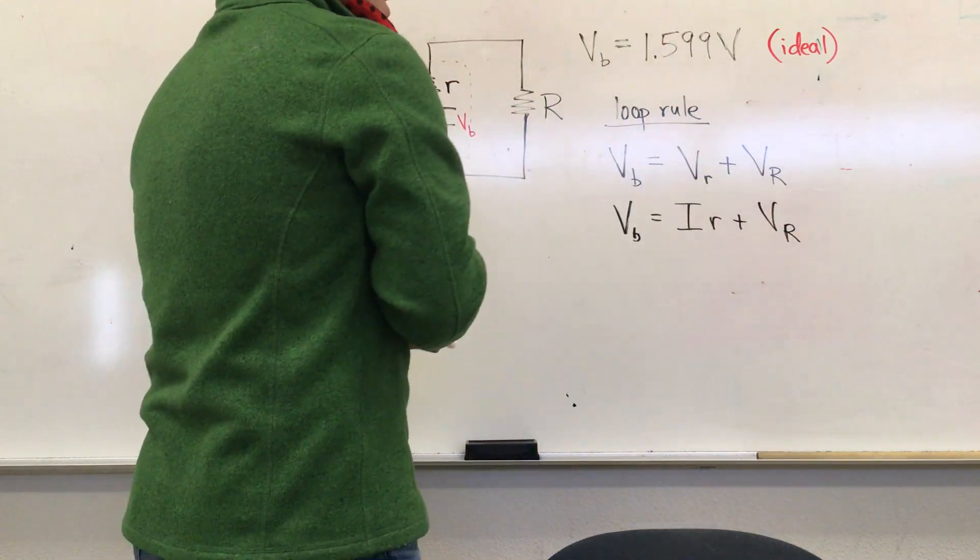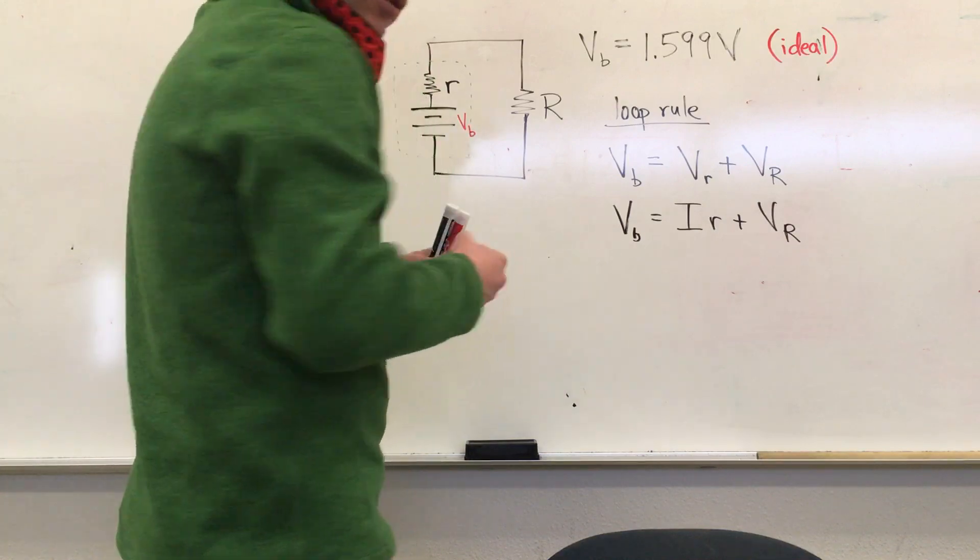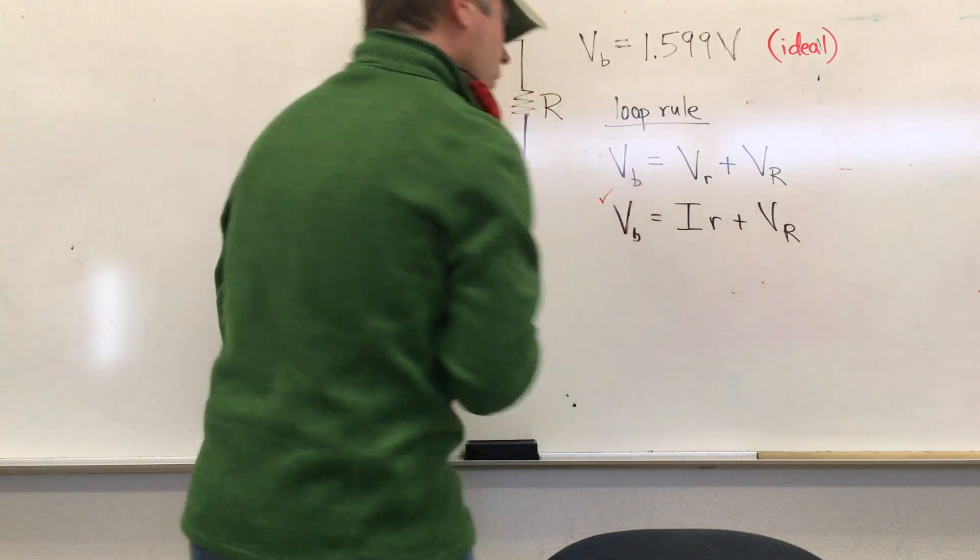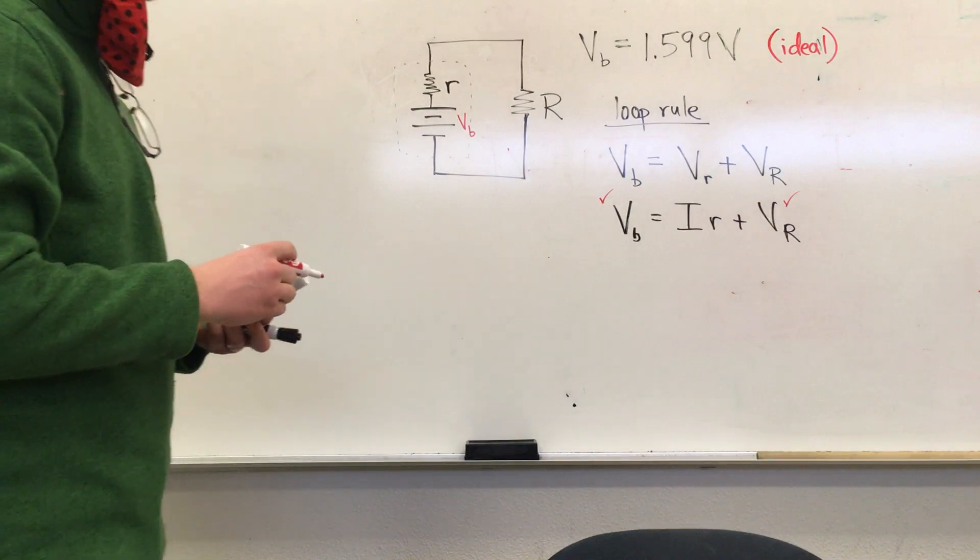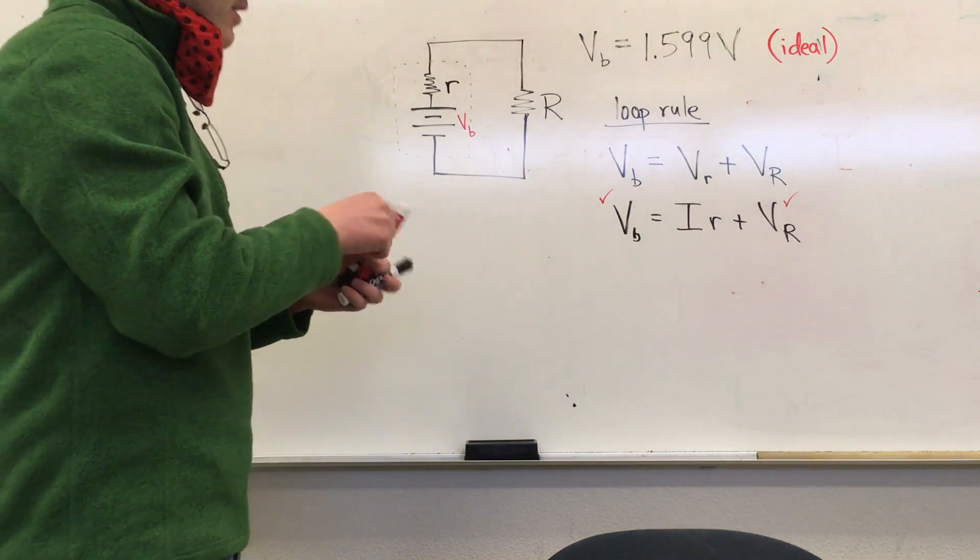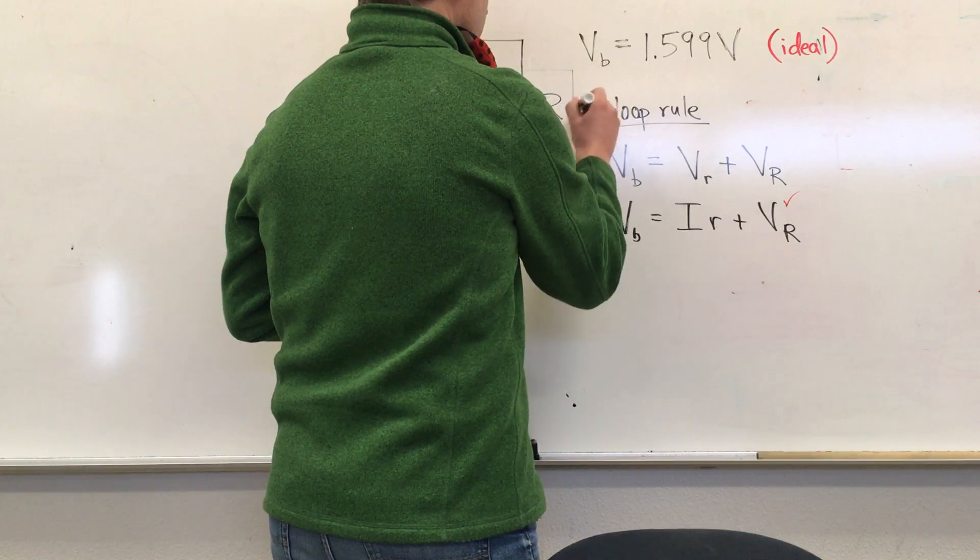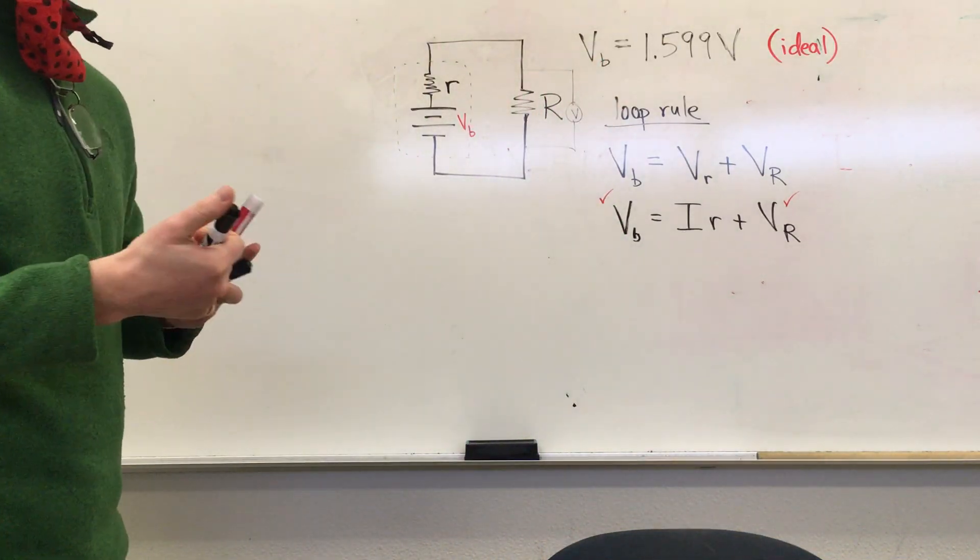The next thing we want to do is realize that we have measured two of these things. We've measured V sub B and we've measured V sub R, the voltage drop across the external resistor, as easy as just taking a volt meter and putting it in parallel here.